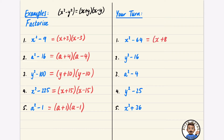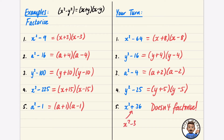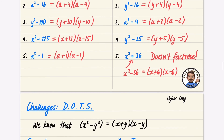Here are the answers: x squared minus 64 gives (x+8)(x−8) since the square root of 64 is 8; y squared minus 16 gives (y+4)(y−4); a squared minus 4 gives (a+2)(a−2); y squared minus 25 gives (y+5)(y−5). The last one cannot be factorized because it has a plus sign — it's a bit of a trick question. If it were x squared minus 36 it would give (x+6)(x−6), but the difference of two squares doesn't work with addition.